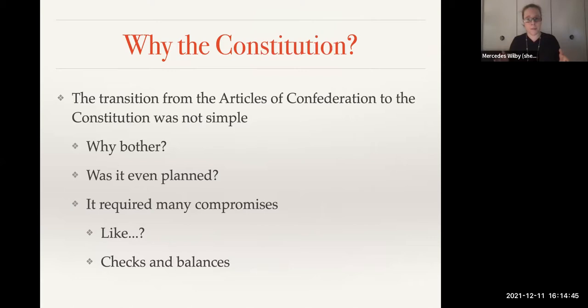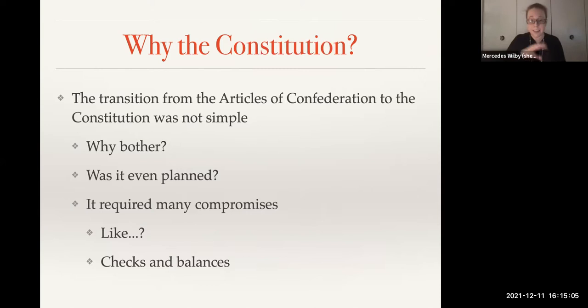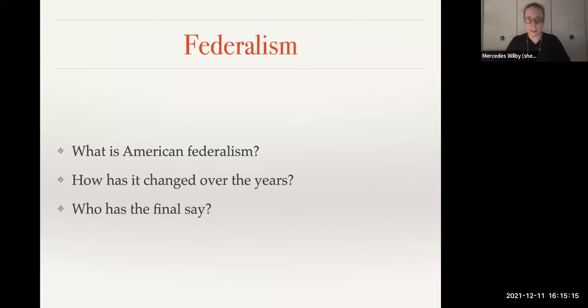We had other compromises as well, including the development of checks and balances to ensure that if we were going to create a federal government with more power than the states, it would have internal checks and balances to keep it under control. Many of these compromises affected the politics and policymaking processes we see today — and more importantly, those covered after the midterm.